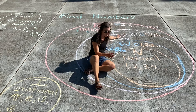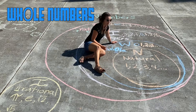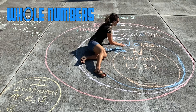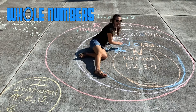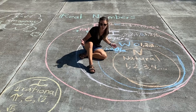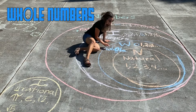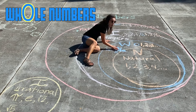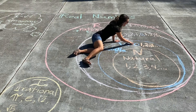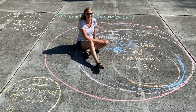Then we move up to whole numbers. As we grow, we start to learn about this concept of none — like, I don't get any cookies when I misbehave. None, zero. So whole numbers — I like to emphasize 'whole' numbers — start with zero and then move on to our natural numbers: one, two, three, four, and so on.